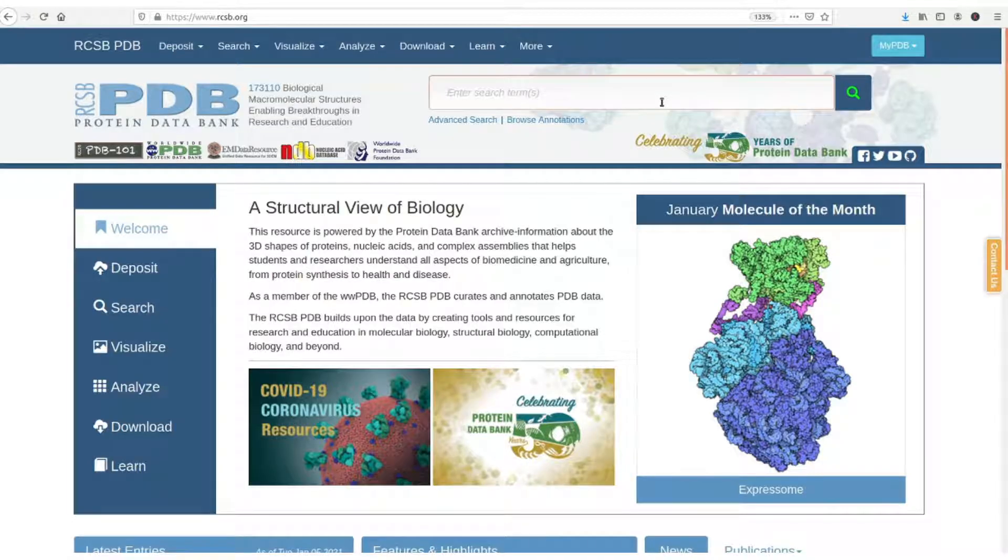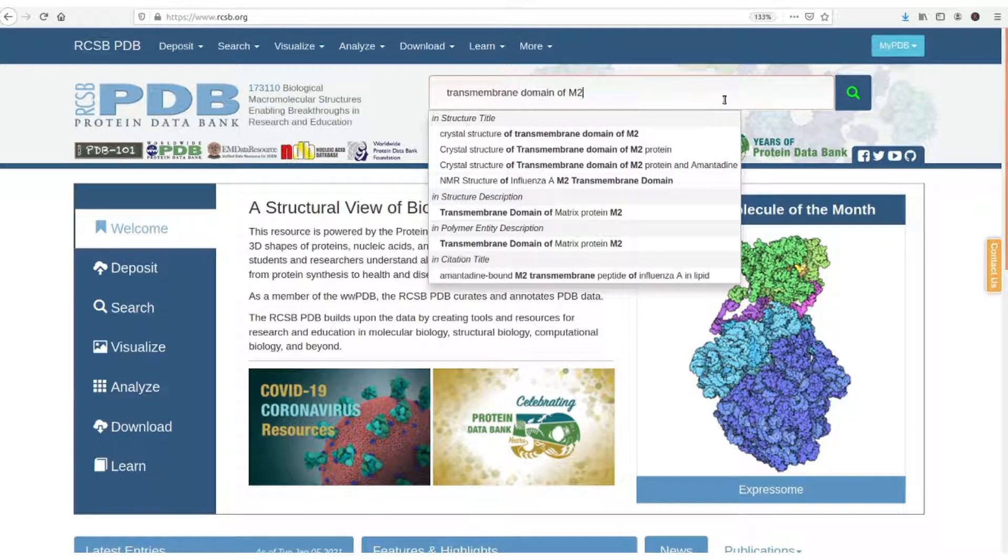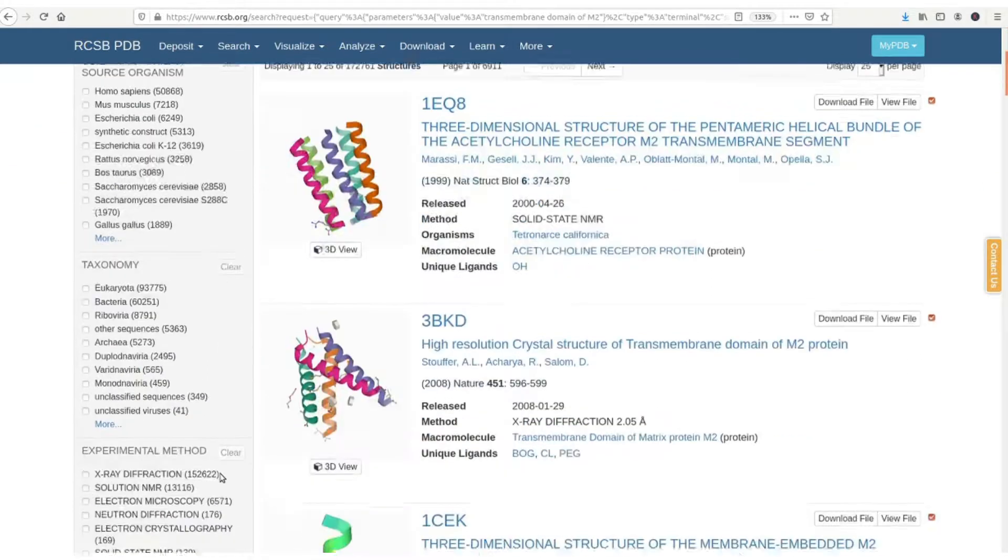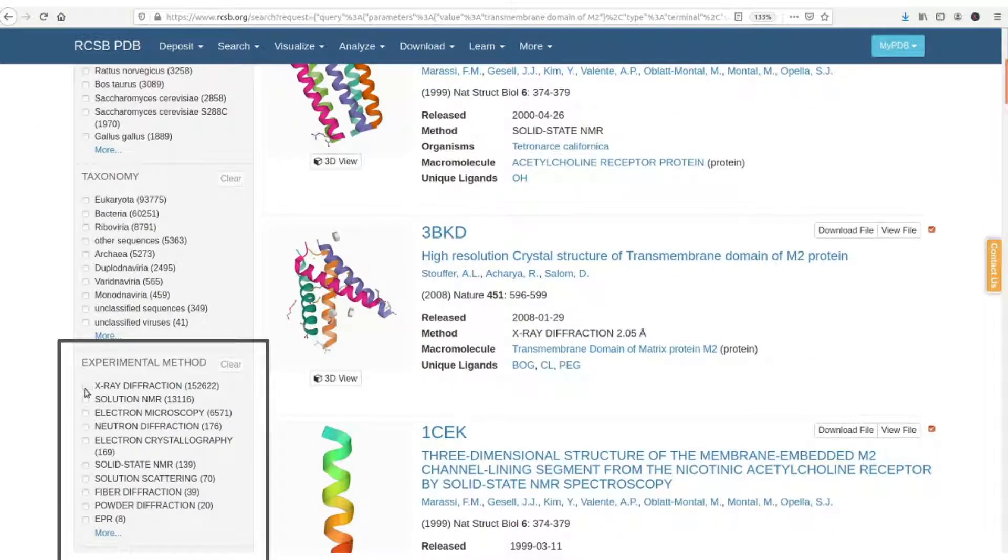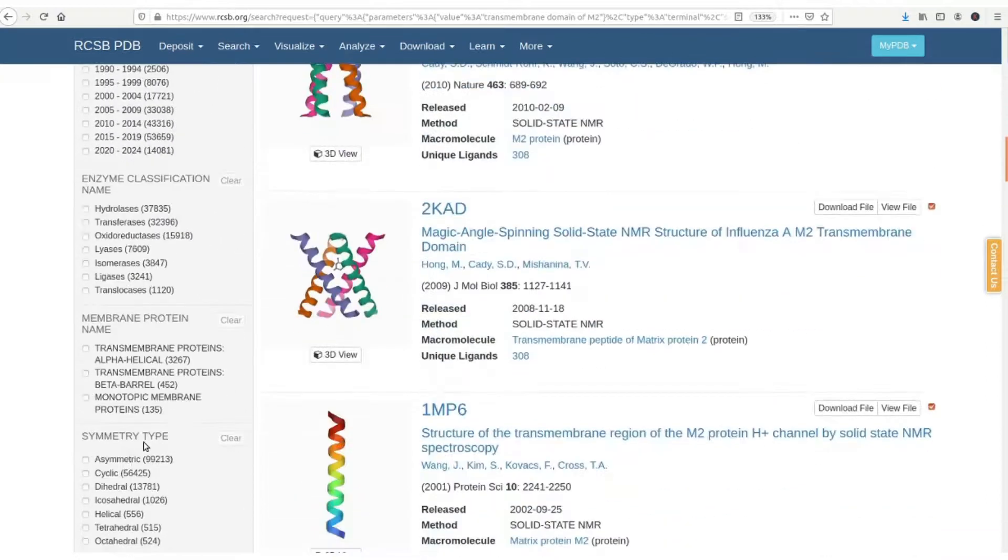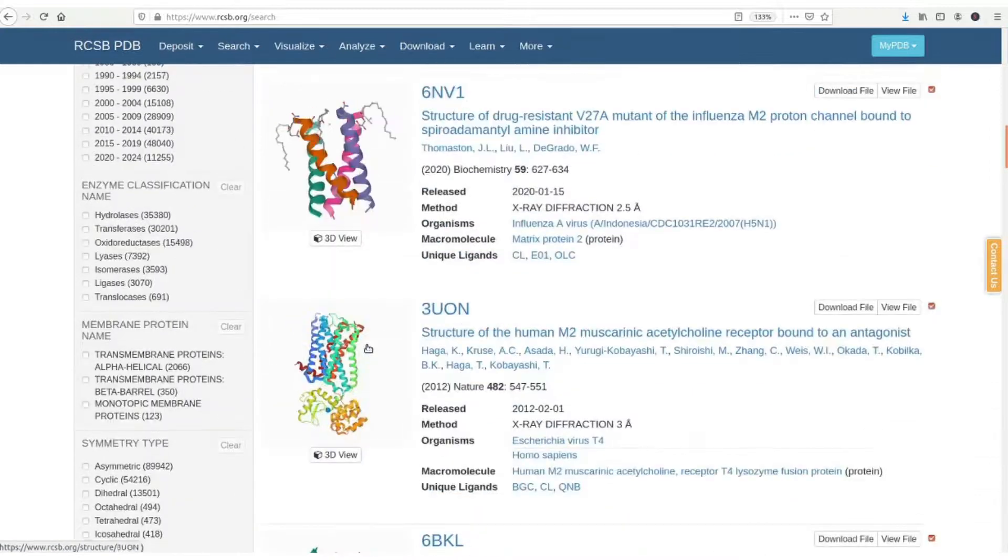PDB database could be a very good starting point to do your research and see if there are any other published 3D structures for your protein. So go to pdb.org and let's search for the transmembrane domain M2 protein. On the left side of the database you will see different organisms where this protein was expressed and the 3D structure was determined. You can also see here different experimental methods that were used for the structural determination. Let's select x-ray in our example here. And down below here there are other criteria for search definition and refinement but for the moment let's go just with this.